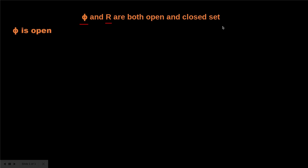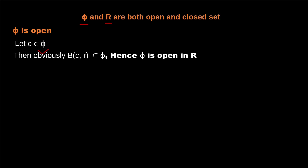First, we're going to show that φ, the empty set, is an open set. If possible, we suppose that C is an element of the empty set φ. Obviously, since C is in an empty set, the open ball with center C and radius R for any R greater than 0 is also an empty set. So we can clearly say that the open ball with center C and radius R is an empty set.